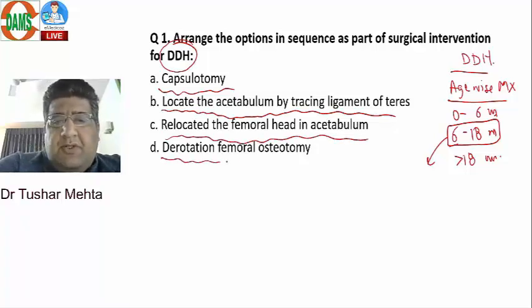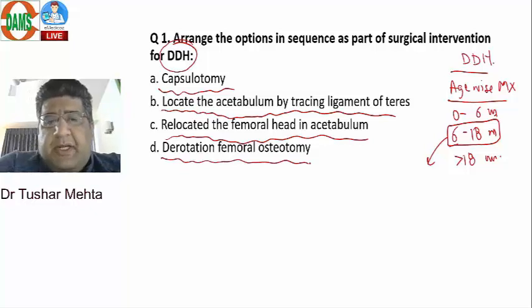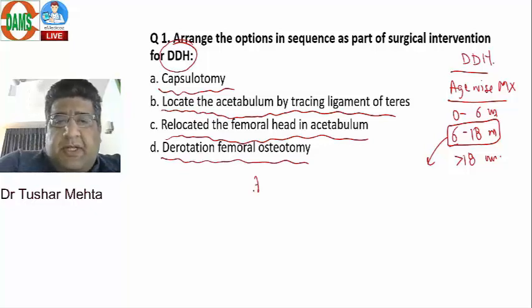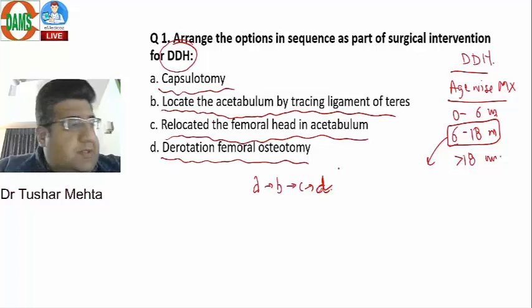After reduction, you perform a derotation osteotomy so the head doesn't dislocate again. Technically, the sequence is A followed by B followed by C followed by D. This is the ideal sequence.